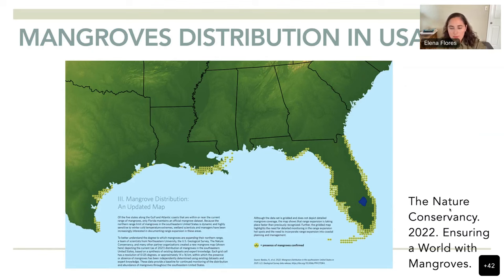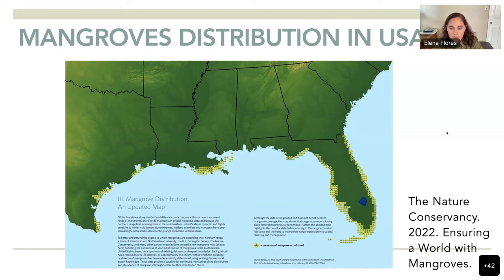I sourced this map from the Nature Conservancy, and this is the actual distribution in 2022, where you can see all the mangroves around the Gulf. Pretty much the most dominant mangrove forests are located on the Florida coast.